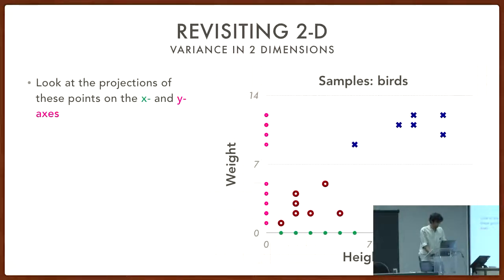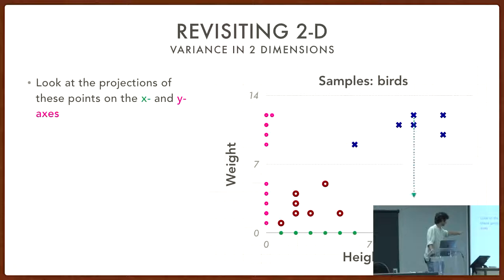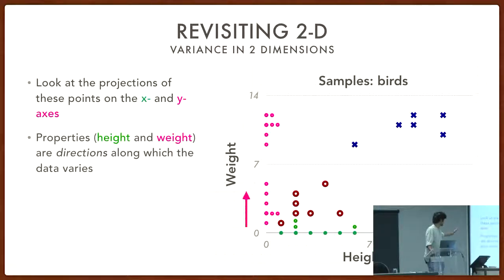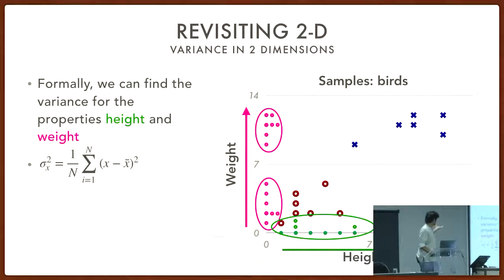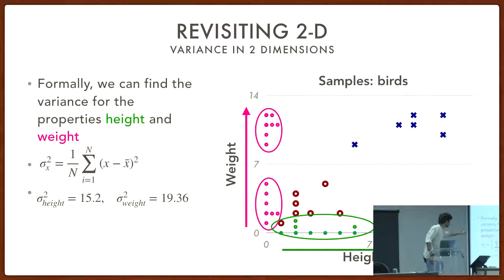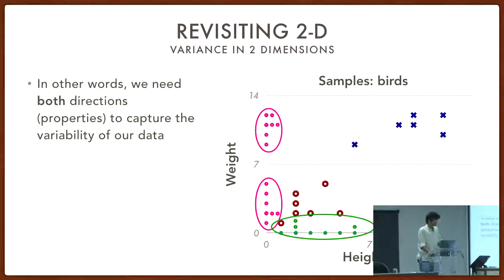Looking at projections along the height axis and the weight axis of the bird data, you can see they separate out into clusters along both axes — they vary along both. If you talk about what clusters are forming along two axes you'd identify four different clusters, two along each axis. The variance gives a similar indication: the variance of all x-coordinates (height) comes out to 15.2, and all y-coordinates (weight) is 19.36. It's varying along both directions, and you need both to explain it.